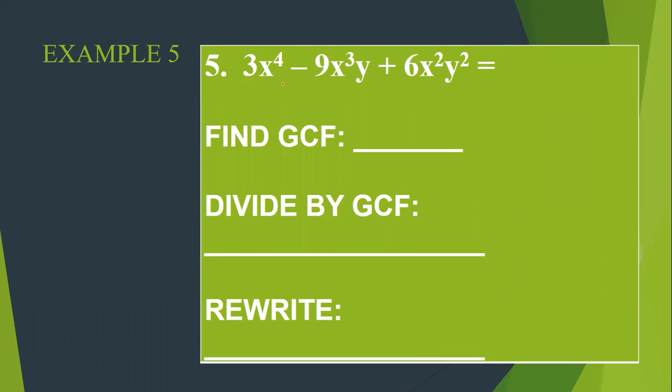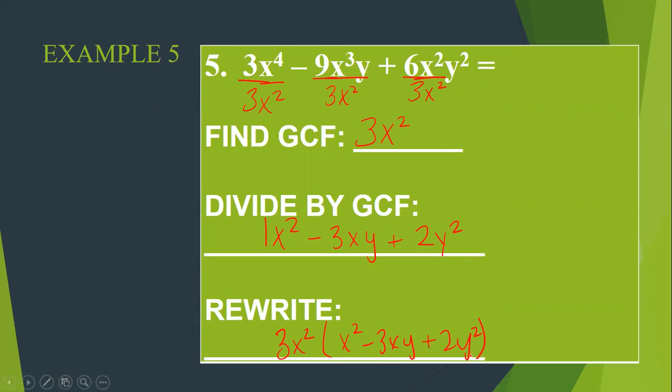Here we go. So on number 5, you had 3, 9, and 6. So the GCF should have been 3. We had x to the 4th, x to the 3rd, and x squared, so it should have been x squared. We had no y, 1y, and y squared, so our GCF has no y in it. So we're going to divide everything by 3x squared to get our quotient, and our quotient is x squared minus 3xy plus 2y squared. So therefore, your factored form is 3x squared times x squared minus 3xy plus 2y squared.